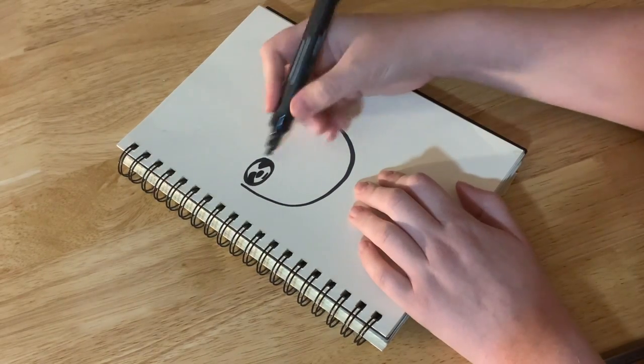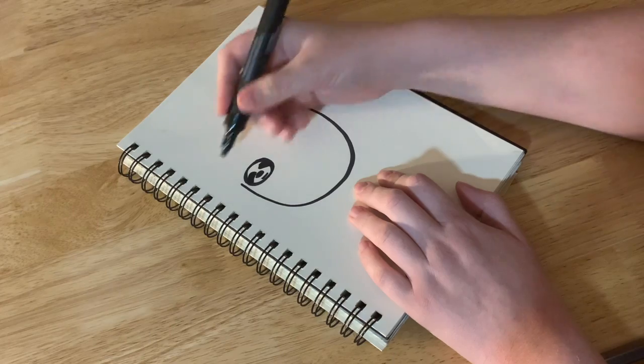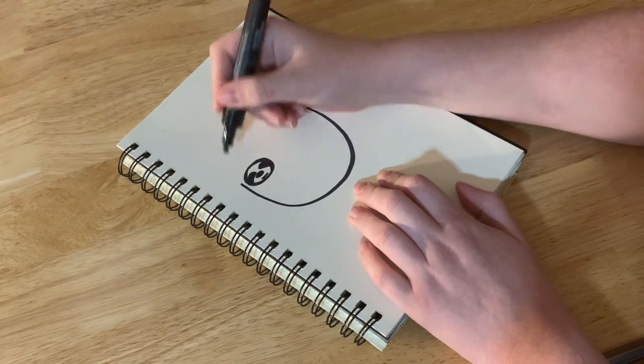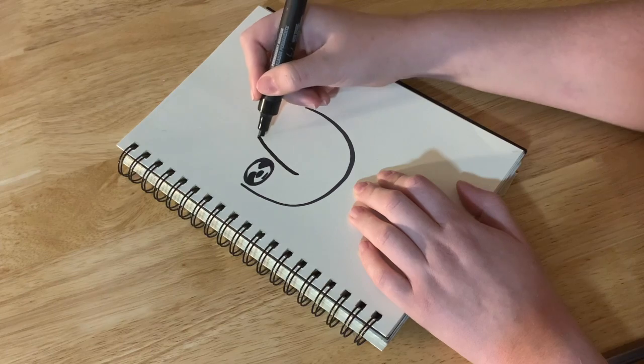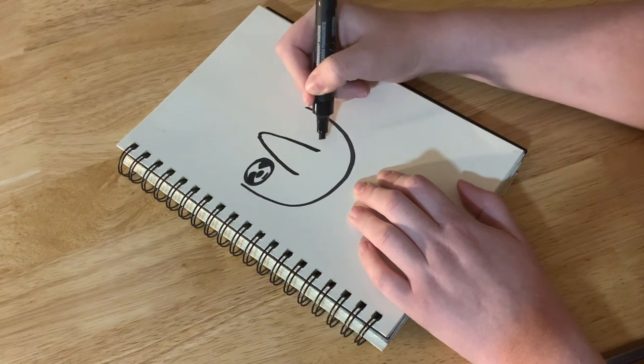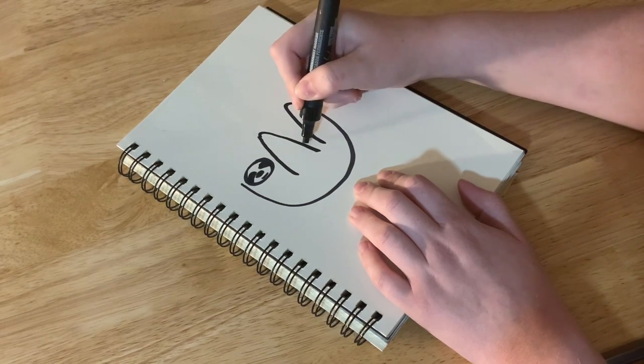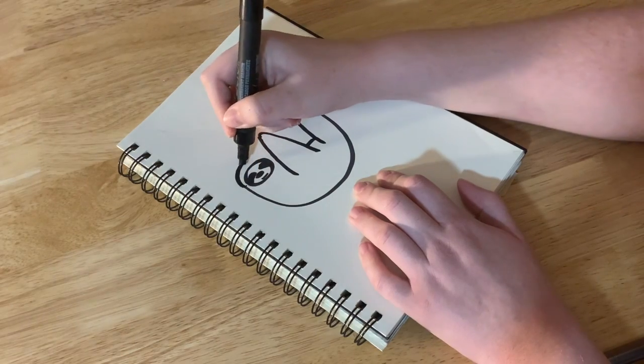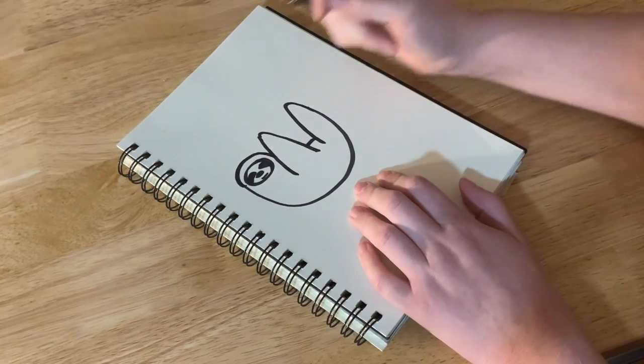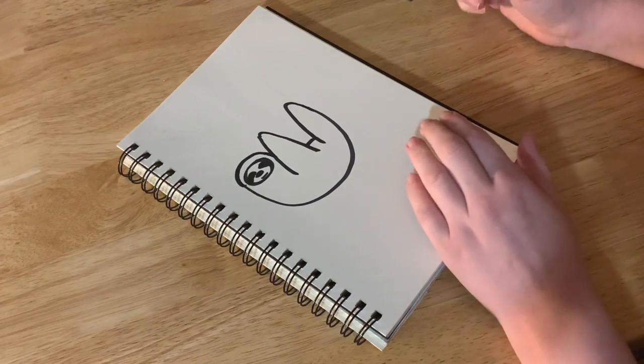For the arms and the legs, this little sloth is going to be holding onto a branch. So I'm going to draw some arms, some legs, connect the stomach and then bring this around to the top of his head just like that.